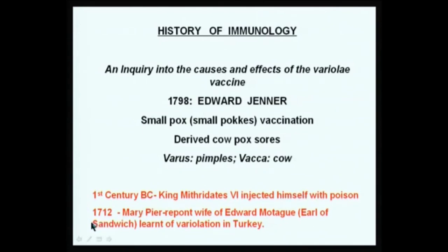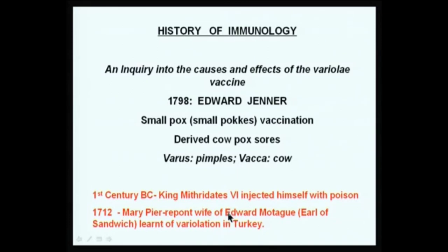Another historical fact: in 1712, Mary Wortley Montague, who was the wife of Edward Montague — the Earl of Sandwich — was a known beauty. After marriage, she was affected by smallpox and her face became disfigured. Fortunately she survived, and when her husband went to Turkey as an ambassador, she learnt of the practice of variolation, which was widespread in Turkey but not known in other parts of the world. She took it upon herself to try and popularize this technique of variolation.